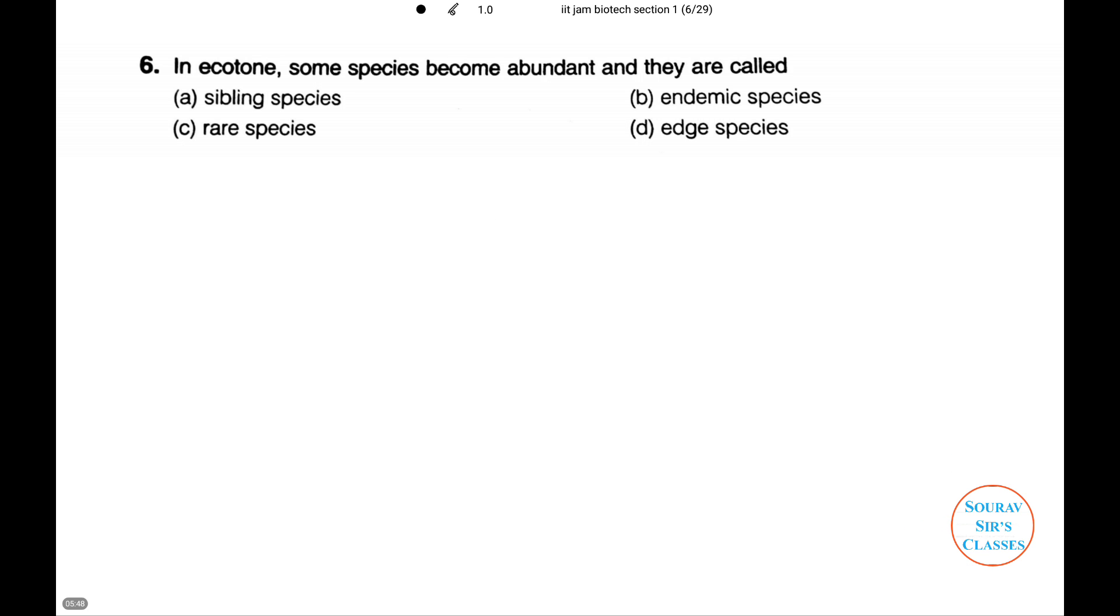In ecotone, some species become abundant and they are called, among the four of them. Let's see what an ecotone is. Let us consider two biotic communities. This is number one and this is number two. Now, this area of transition between these two biotic communities of the ecosystem is called an ecotone.